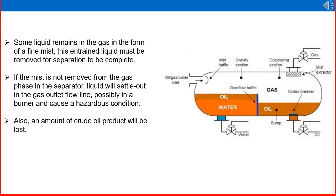Some liquid remains in the gas in the form of a fine mist. This entrained liquid must be removed for separation to be complete. If the mist is not removed from the gas phase in the separator, liquid will settle out in the gas outlet, possibly in a burner or downstream of the separator, or it will go to a compressor and cause a hazardous condition. Also, crude oil product will be lost.